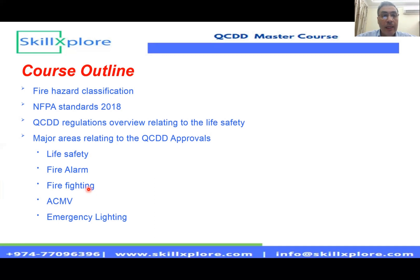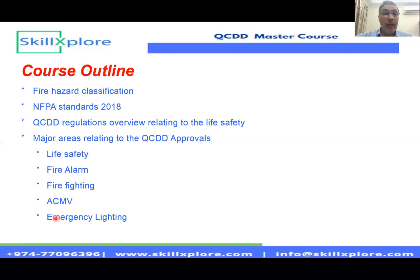We'll talk about the water tank and the fire pump. Talking about ACMV — air conditioning and mechanical ventilation — which will be applicable for the smoke management system and smoke extraction system, evacuating the building and extracting all smoke outside. What are the types of ventilation: mechanical ventilation and natural ventilation? What are the requirements for the QCDD? All of this is well indicated under the QCDD guidelines, and we will also cover the energy air-related sections accordingly.